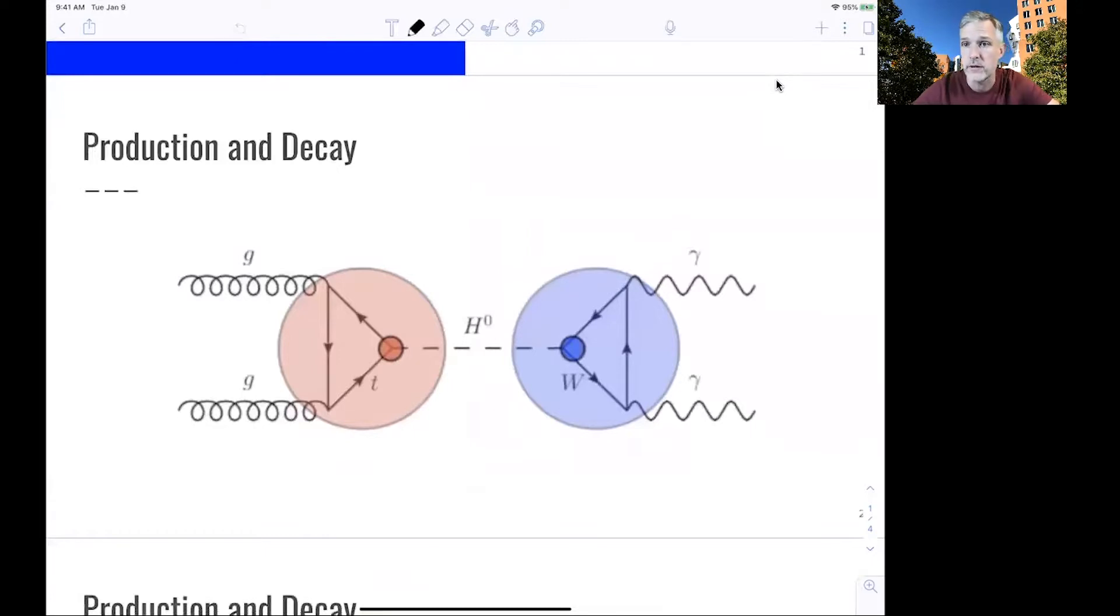We already know that the Higgs boson has a mass of 125 GeV. The collisions have to have enough energy to produce this particle. We're using protons because they can be accelerated easier than leptons to those energies.